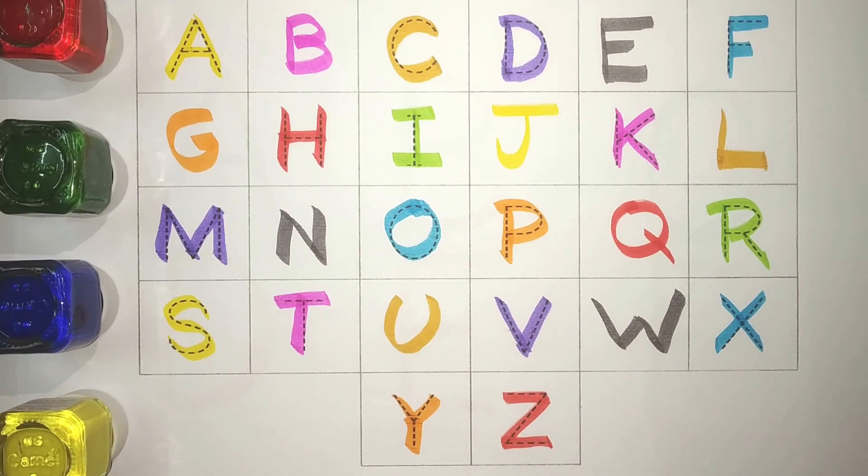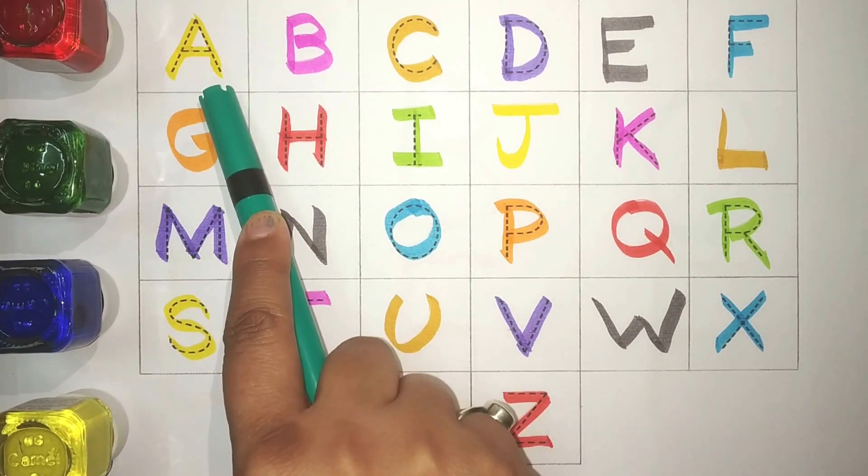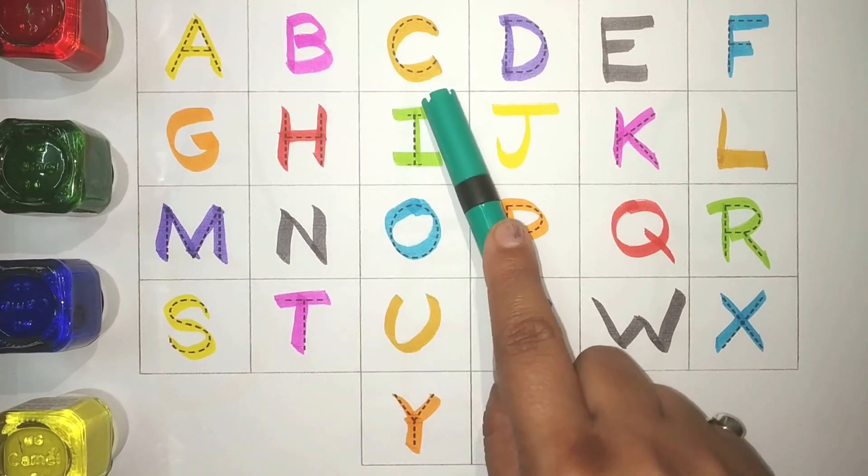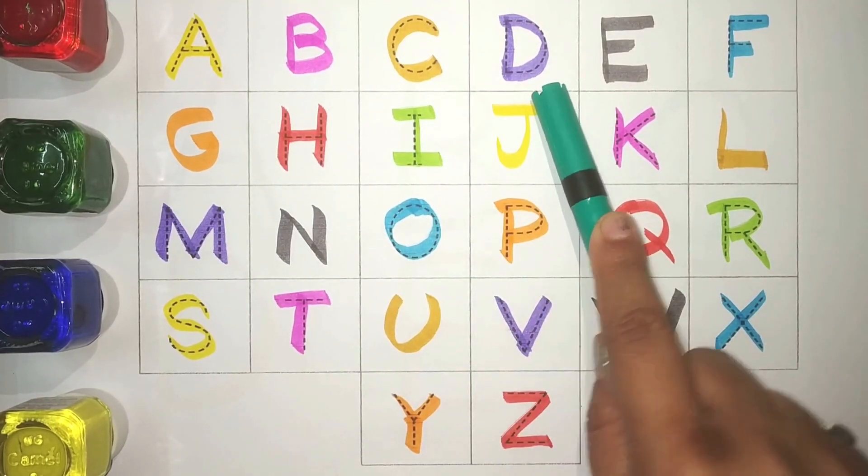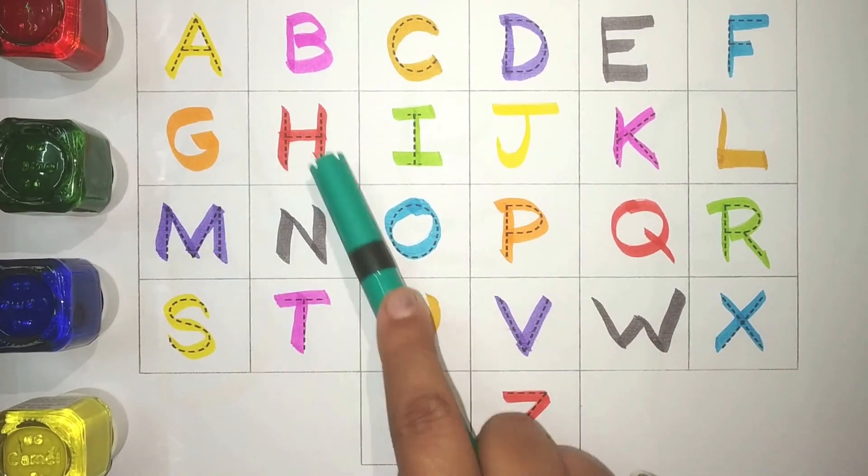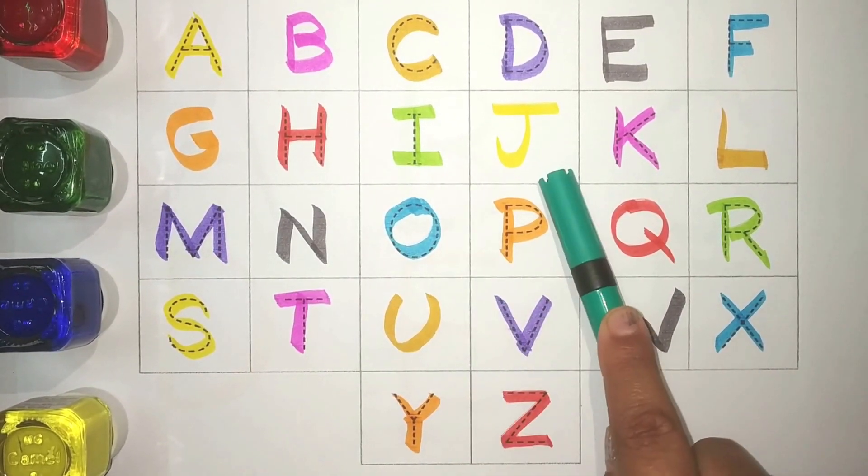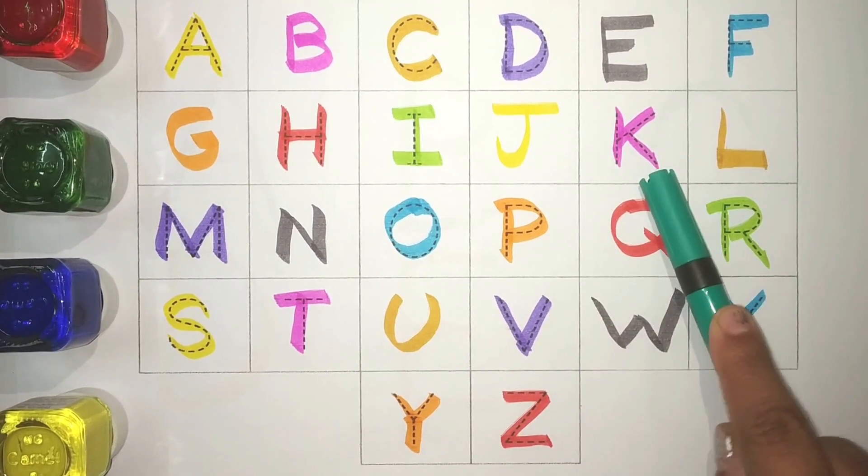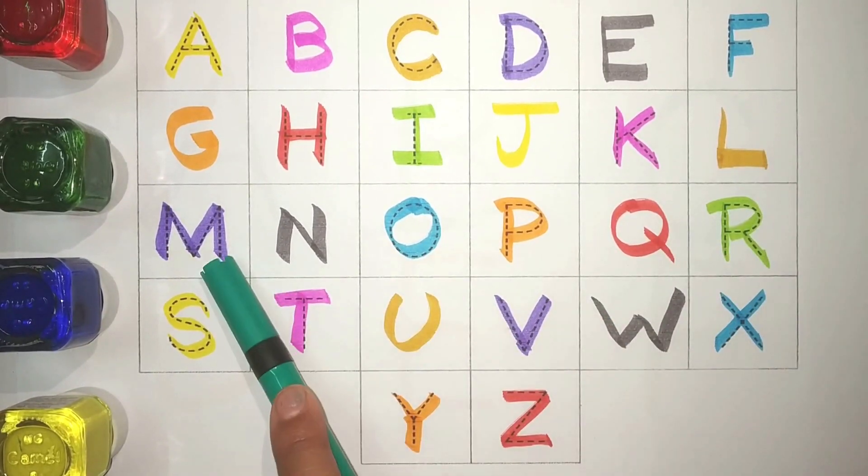Let's revise. A, Yellow. B, Pink. C, Mustard. D, Purple. E, Grey. F, Blue. G, Orange. H, Red. I, Green. J, Yellow. K, Pink. L, Mustard. M, Purple.